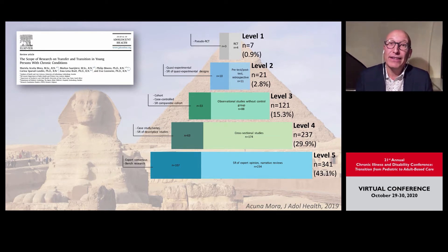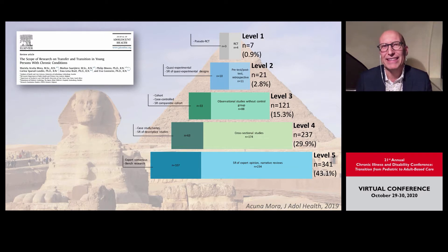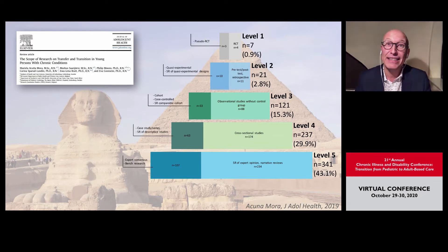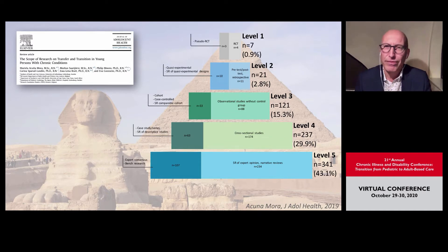Looking at quasi-experimental studies, we identified 21 papers, corresponding with close to three percent. This clearly shows that there is very little evidence on the effectiveness of transition and what we should implement as healthcare interventions. For us, this was clearly a sign that more research — and more rigorous research using high levels of evidence — was highly needed.